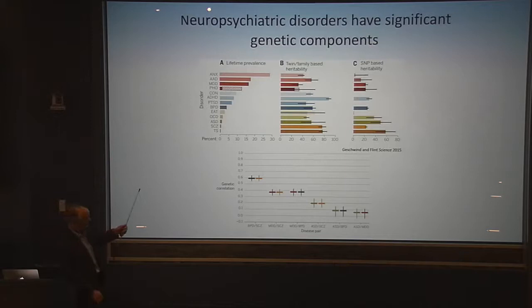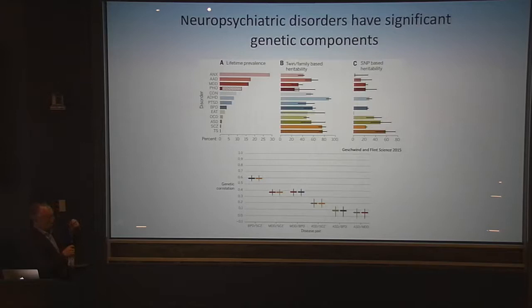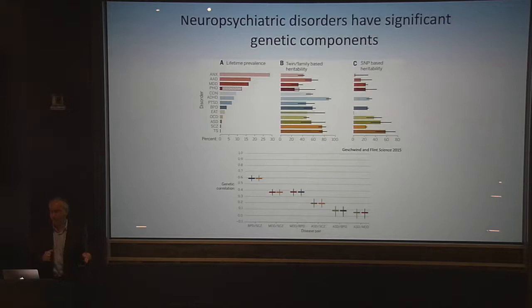From common genetic variation we can calculate a genetic correlation between disorders. Bipolar and schizophrenia share about 60% correlation; autism and schizophrenia almost 20%. There's a substantial part of the heritable component of these disorders that's actually shared. This raises an interesting conundrum about the specificity of these diagnoses — what is specific and what is shared, and what does that mean from a neurobiological standpoint?